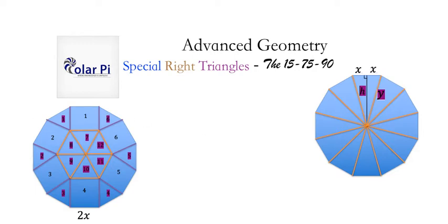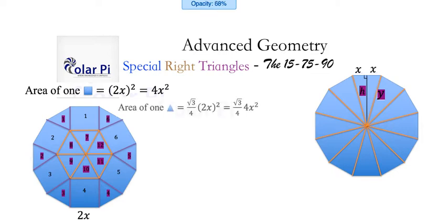So let's get on with it then. Using the visual on the left, we see that the area of one of the squares is 2X squared, and that's just 4X squared. And the area of one of the equilateral triangles will have to be root 3 over 4 times 1 side squared, so root 3 over 4 times 2X squared, and that we can simplify to X squared times root 3.